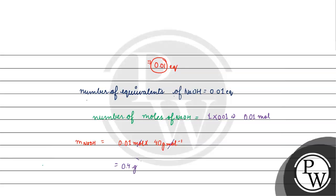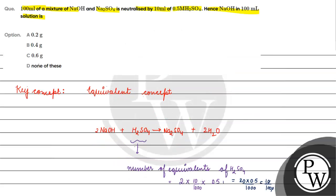Mass of NaOH will be equal to 0.4 gram. Here we have option B, 0.4, as the correct answer for this question. I hope you understood it well. Thank you and all the best.